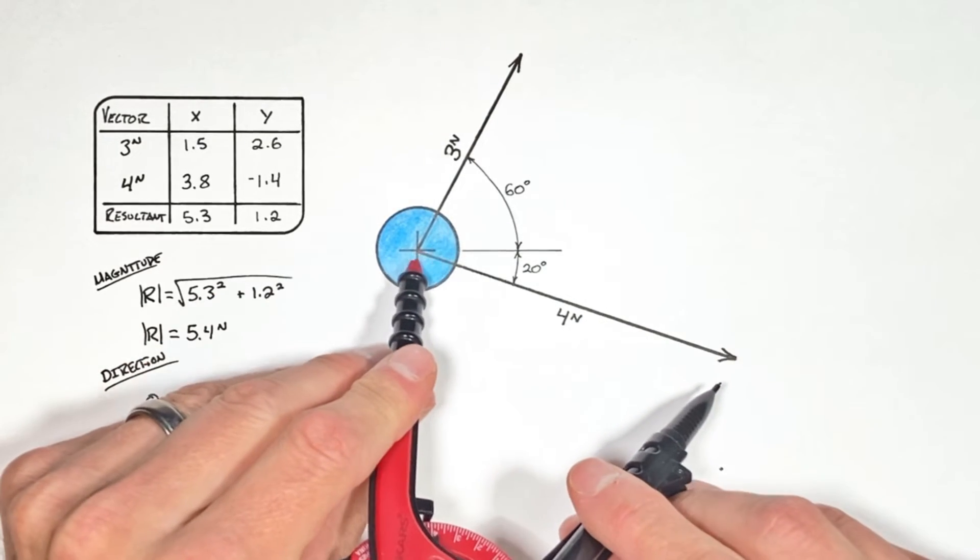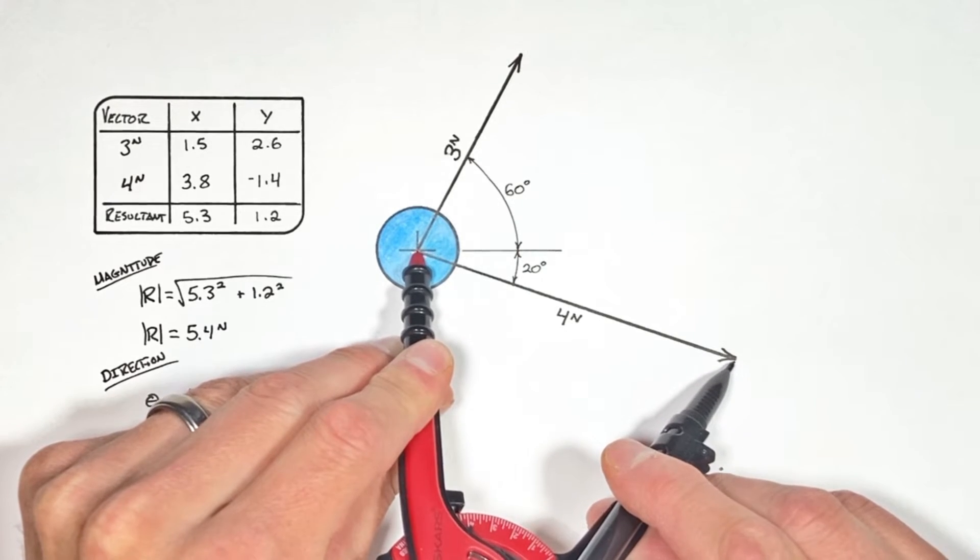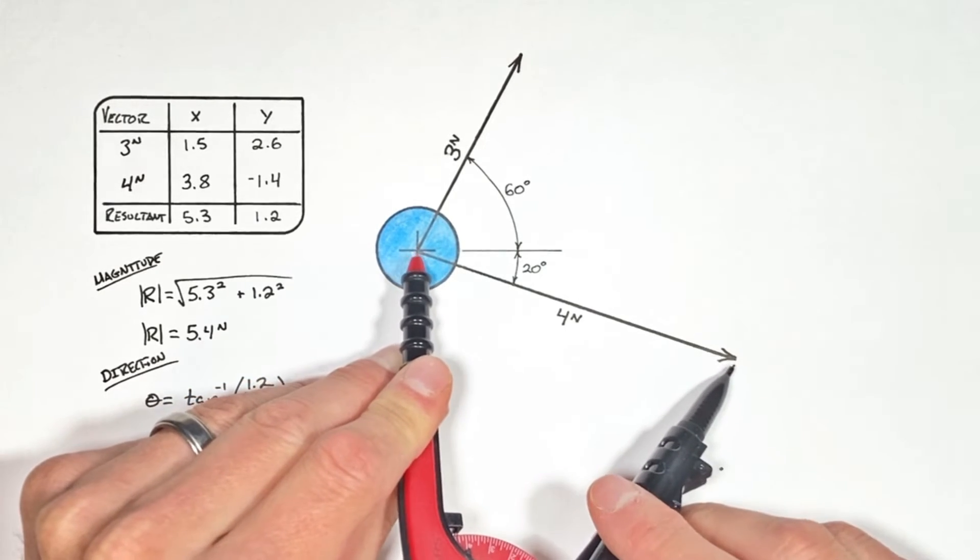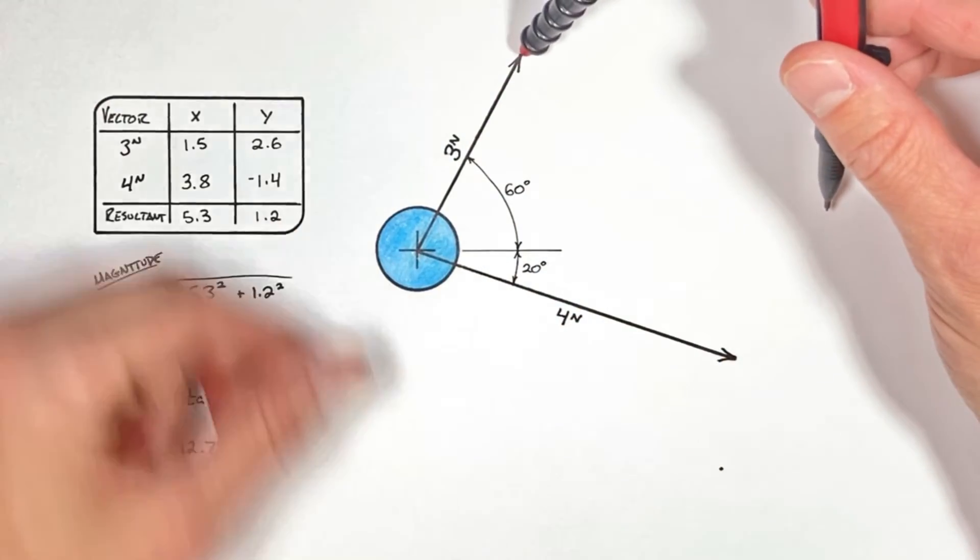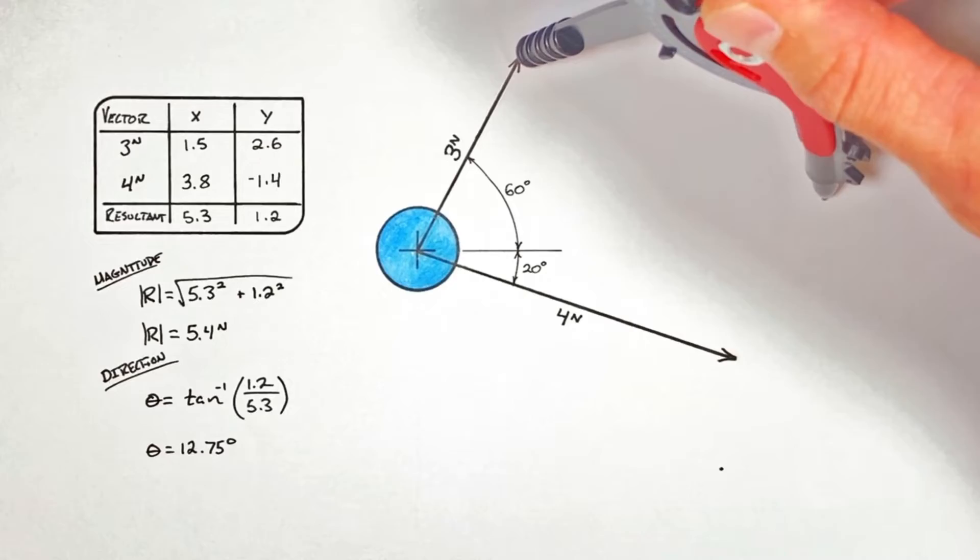You see if we take our compass and we set it to the length of one of our vectors here, say in this case our four Newton vector. I'm going to take my compass and put it at the tip of the opposite vector and just draw an arc.